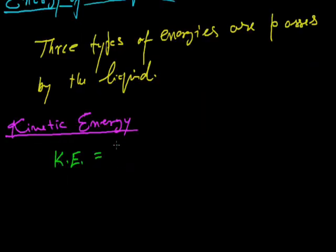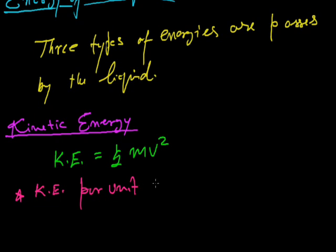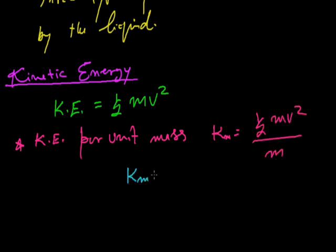Kinetic energy per unit mass, Km, is half MV squared by M. Km will be half V squared only.